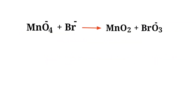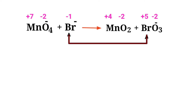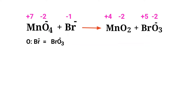Identify the reducing and oxidizing agents using the rules for assigning oxidation numbers. In the ion electron method, the reaction is divided into two half reactions, which are balanced and then added together. Bromine has a charge of minus 1 and changes to plus 5, so bromine is being oxidized. Manganese has a charge of plus 7 and changes to plus 4, so manganese is being reduced.